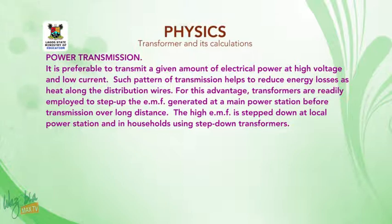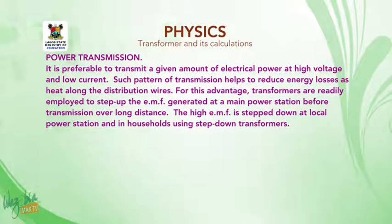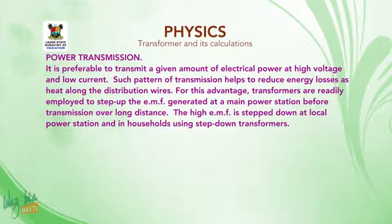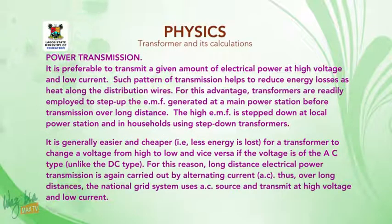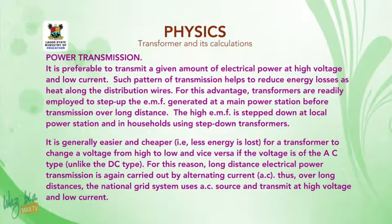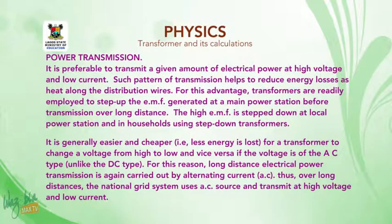It is preferable to transmit a given amount of electrical power at high voltage and low current. For this advantage, transformers are readily employed to step up the EMF generated at a main power station before transmission over a long distance. The high EMF is stepped down at a local power station using a step-down transformer. It is generally easier and cheaper — that is, less energy is lost — for a transformer to change voltage from high to low and vice versa if the voltage is AC rather than DC. For this reason, long-distance electrical power transmission is carried out using alternating current (AC), and the national grid system uses an AC source and transmits at high voltage and low current.